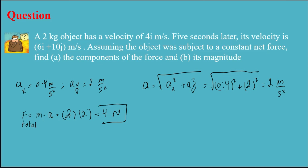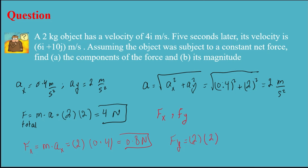Now, what if I want to find the components of force — fx and fy? fx equals m times ax: mass is 2 kilograms and ax is 0.4, so fx equals 0.8 newtons. fy equals m times ay: 2 kilograms times 2 meters per second squared gives fy equal to 4 newtons. You can also find the total force by taking the magnitude of the force components.